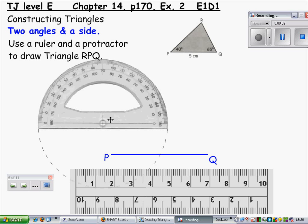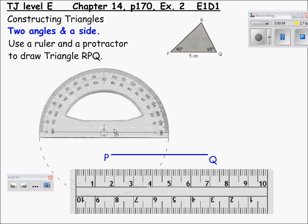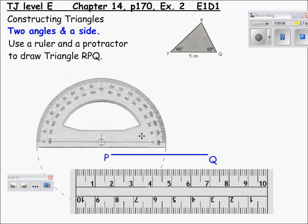Hello. Today we are going to be looking at constructing triangles that involve two angles and one side. For this task you will require a ruler and a protractor.